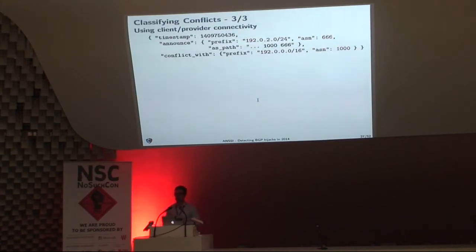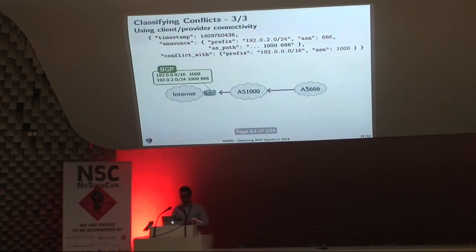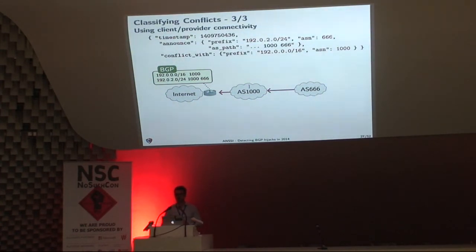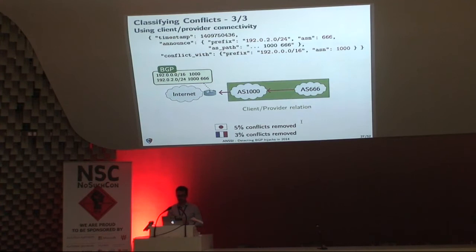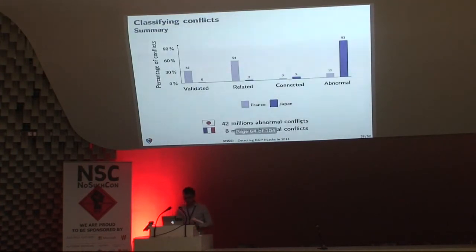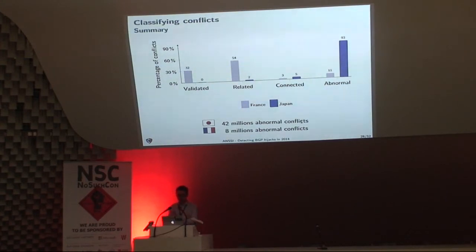The last thing we try is to use the client-provider connectivity between two autonomous systems. As a simple example, we can check whether the AS path shows that Autonomous System 666 — which is sending the conflicting update — is connected to AS1000. If this update message were an actual hijack, it would be possible for AS1000 to simply put a filter and drop the announcement. This lets us say these conflicts are not hijacks. In France and Japan, we can remove close to 5% of conflicts this way. If we put everything together, for France we need to look for BGP hijacks within about 8 million abnormal conflicts; for Japan we still have 42 million conflicts to check.